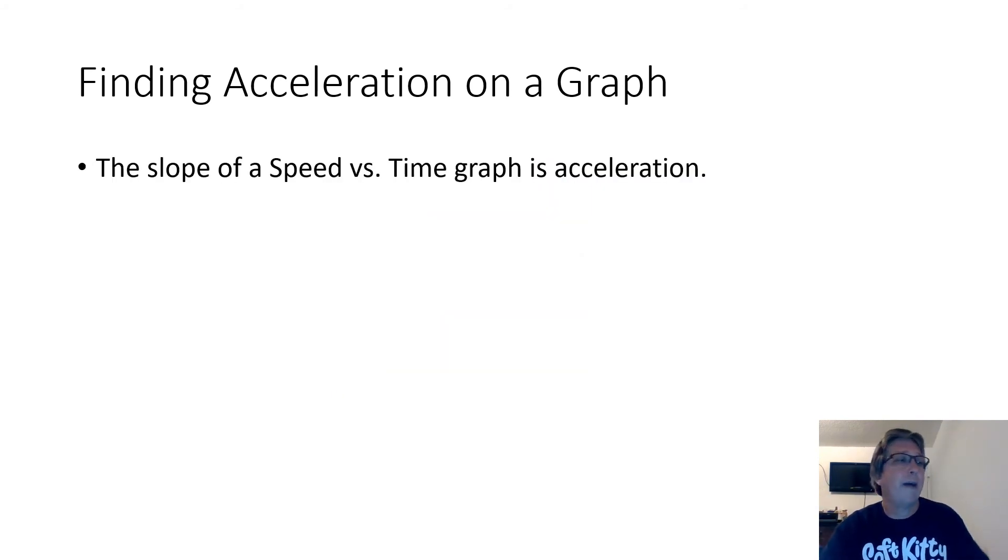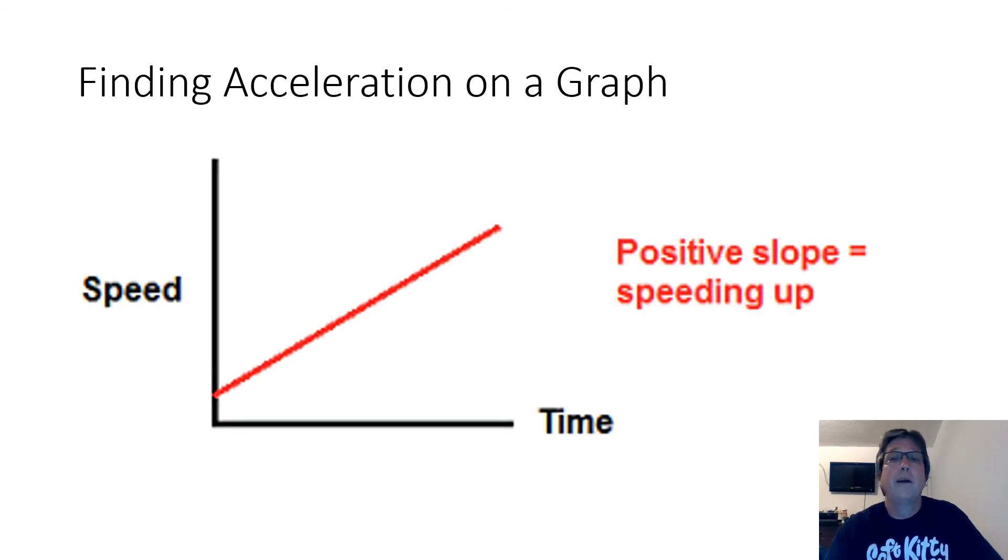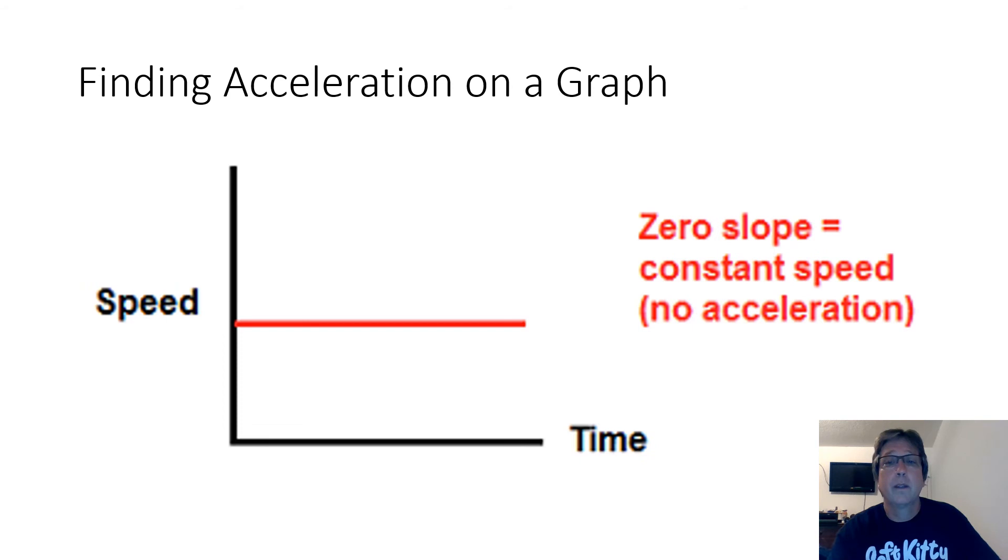Now another graph that we commonly see is one where we plot an object's speed against time. In a speed versus time graph, the slope of this graph is acceleration. So for an object that's accelerating at a steady rate, these slopes are going to be straight lines. And this is how they shake out. A positive slope gives us a positive acceleration, which means speeding up. A flat line has no slope. That means the object has no acceleration. No acceleration means not changing speed. So the speed is staying the same.